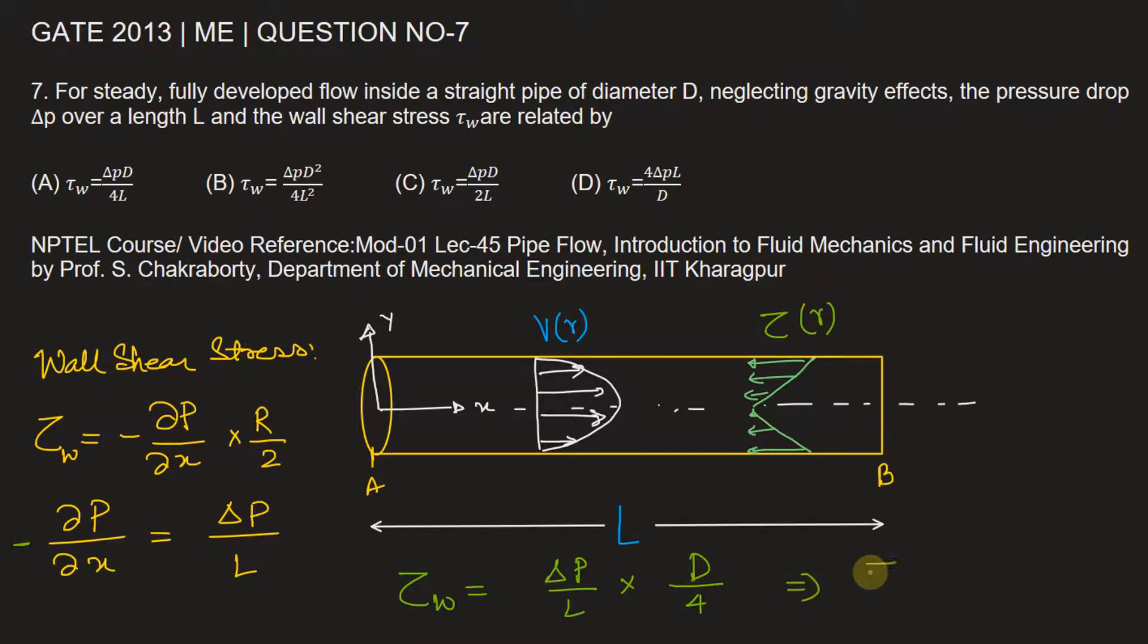So from here you see that τW will be equal to ΔP, the pressure drop into the diameter of this pipe, divided by 4 times L length. Therefore, from here we can say option A is the correct choice.